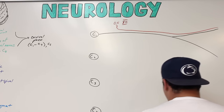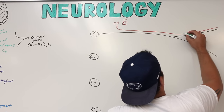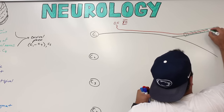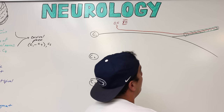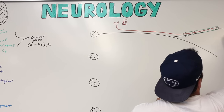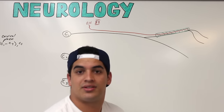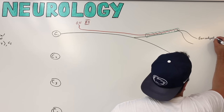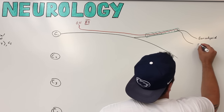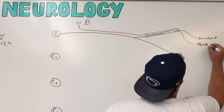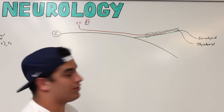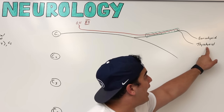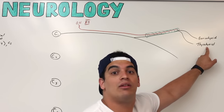That C1 branch running with the hypoglossal nerve will come out and supply two muscles. One is the geniohyoid — a suprahyoid muscle that elevates the hyoid bone. The other is the thyrohyoid, which depresses the hyoid bone and elevates the larynx.